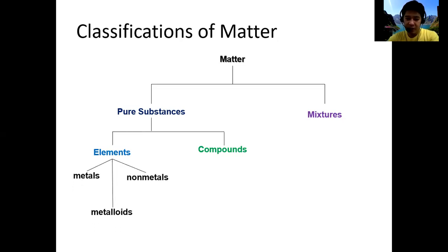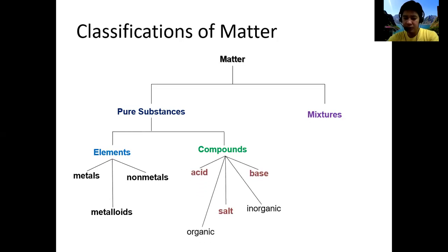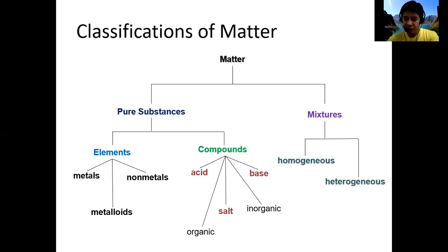For elements, we have three types: metals, non-metals, and metalloids. For compounds, the two major types are organic compounds and inorganic compounds. We will also discuss acids, salts, and bases. For mixtures, we have homogeneous mixtures and heterogeneous mixtures. This is the tree diagram of the classifications of matter.